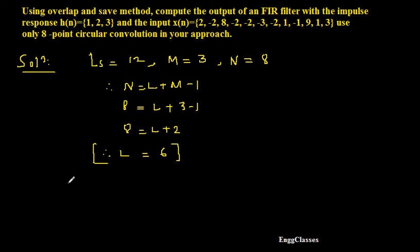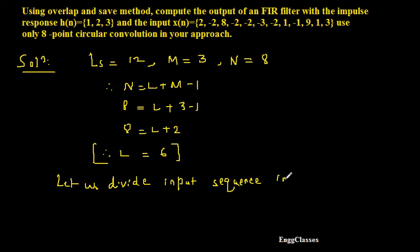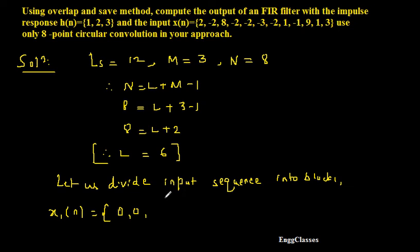So now let us divide the input sequence into blocks. For x1[n], the size must be 8. I consider 6 samples from x[n] and the remaining 2 samples must be from the previous block. Since there is no previous block here, for the first block I will consider them as 0. So I will consider the first 6 elements: 2, minus 2, 8, minus 2, minus 2, minus 3. This is the first block x1[n].